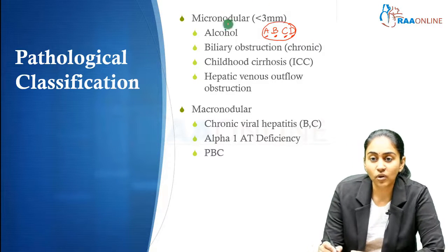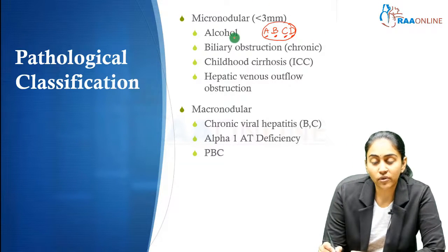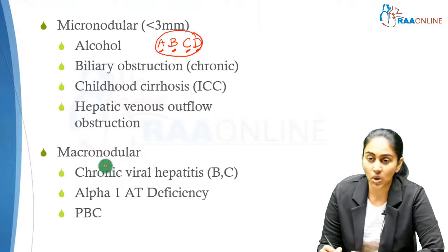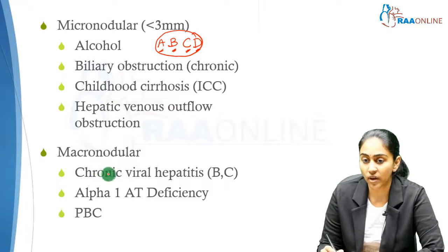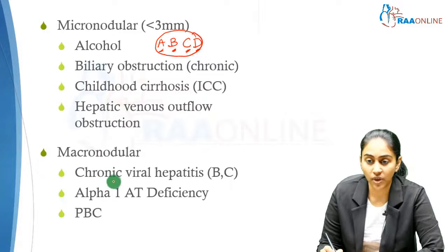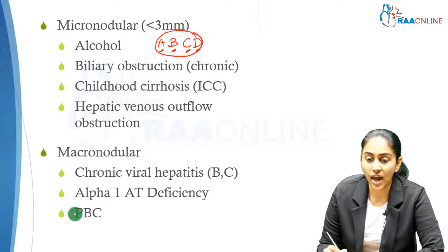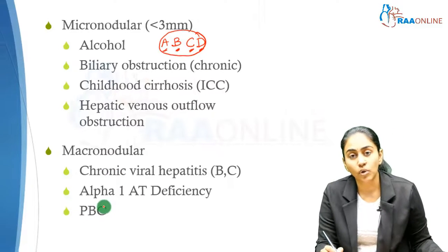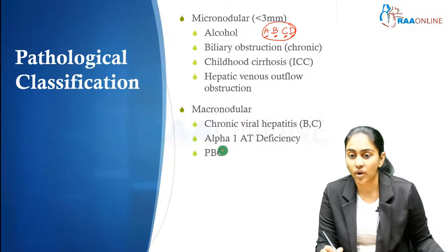For macronodular cirrhosis — since alcohol falls under micronodular, the other very important cause is chronic viral hepatitis, which comes under macronodular. So chronic viral hepatitis is an important cause of macronodular cirrhosis. Alpha-1 antitrypsin deficiency and primary biliary cholangitis are also important causes of macronodular cirrhosis.